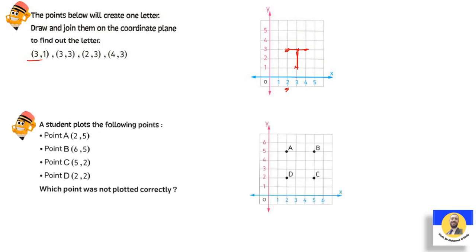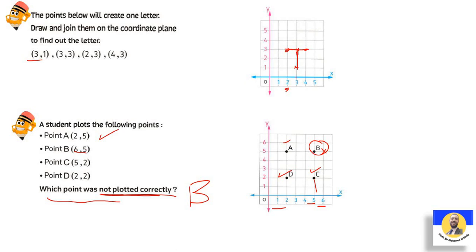A student plots the following points — let's check each one. Point A (2, 5): move two right then up five — correct. Point B (6, 5): move six right then up five — this point seems incorrectly placed. Point C (5, 2): move right to five then up two — correct. Point D (2, 2): move right to two then up two — correct. Which point was not plotted correctly? Point B — it should have been at (5, 5), not (6, 5).